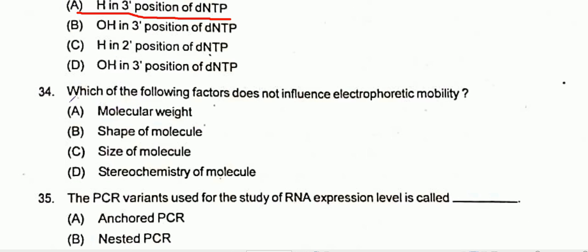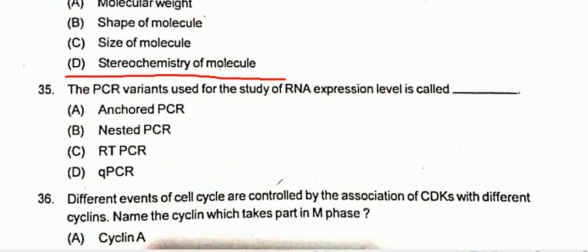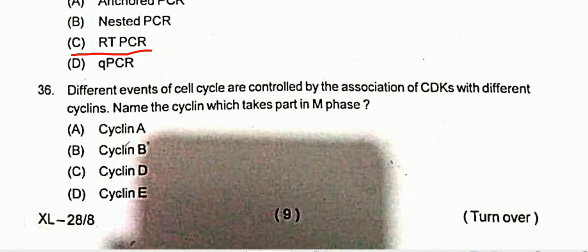Question 34: Which of the following factors does not influence electrophoretic mobility? Option D: the stereochemistry of the molecule. Question 35: The PCR variant used for studying RNA expression levels is called RT-PCR. Option C is correct. Question 36: Different events of the cell cycle are controlled by CDK association with different cyclins. The cyclins that take part in M phase are Option A and B: cyclin A and cyclin B.